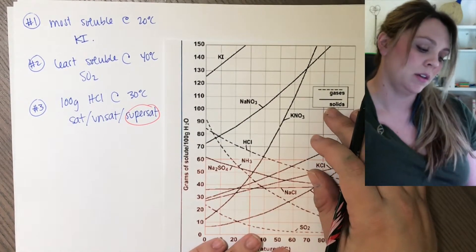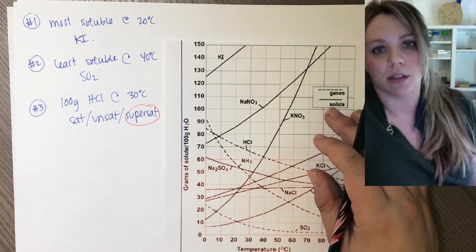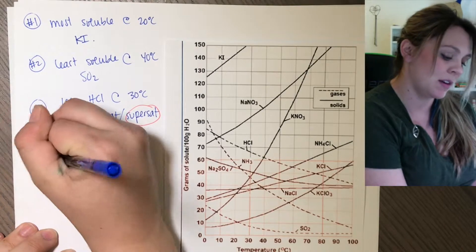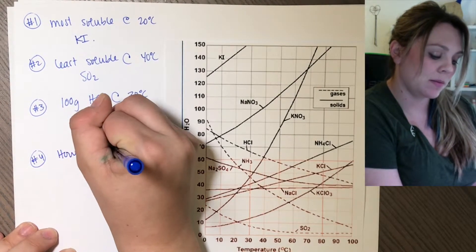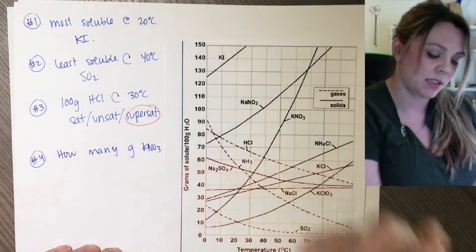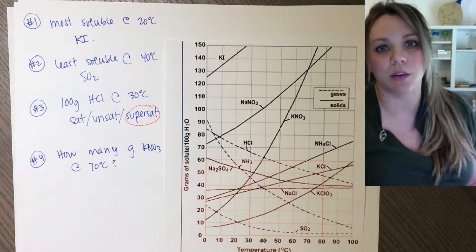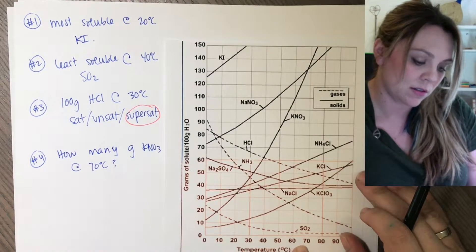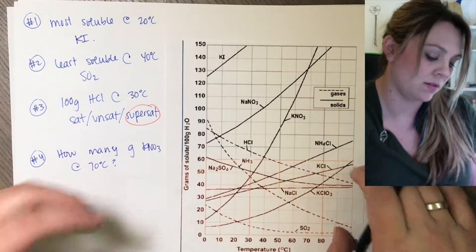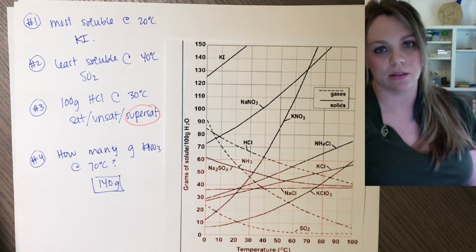They could give you anything like this asking whether a point is saturated, super saturated, or unsaturated. They could also ask super basic: how many grams of KNO3 (potassium nitrate) can be dissolved at 70 degrees Celsius? Go to 70 degrees Celsius, find KNO3, go up to 140. You could dissolve 140 grams of KNO3. Easy — these are the easy questions.